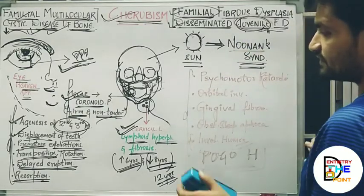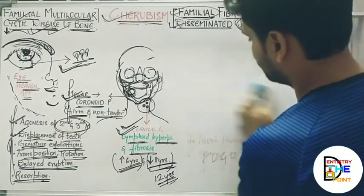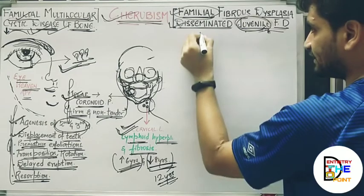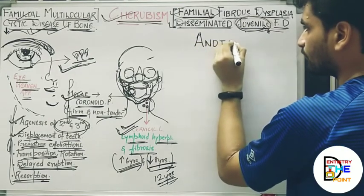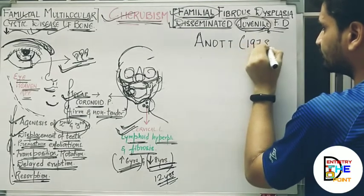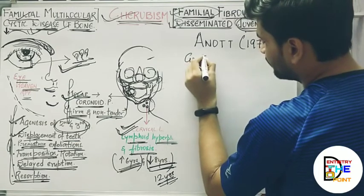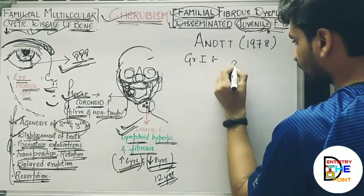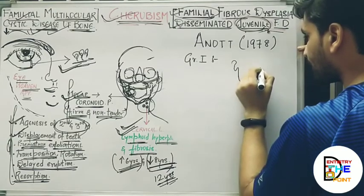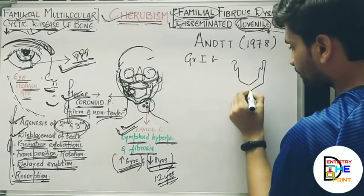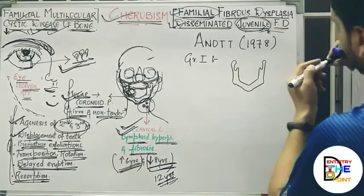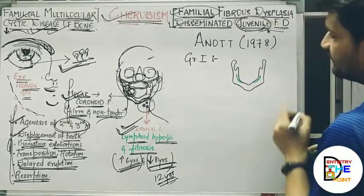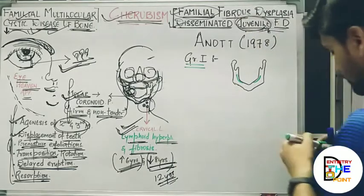Now there is a grading system for cherubism, given by R0 in 1978. In Grade 1, cherubism affects only both the ascending rami of the mandible.